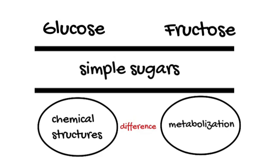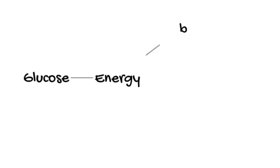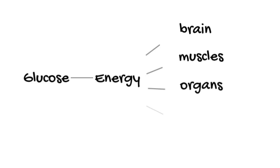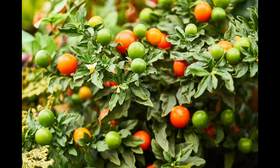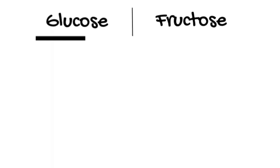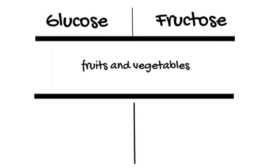Fructose and glucose are metabolized differently in the human body. Glucose is the primary source of energy for the body's cells, including the brain, muscles, and other organs, and is essential for normal body functions. It is naturally produced by plants through photosynthesis and can be found in various foods such as fruits, vegetables, and grains. However, fructose is only naturally produced in fruits and vegetables.